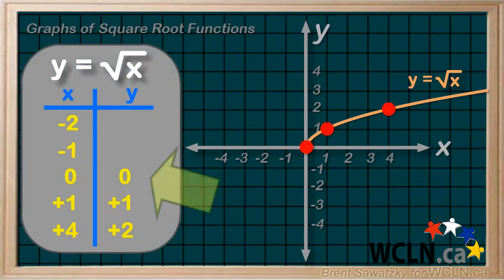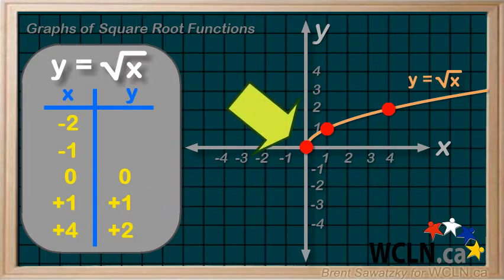Recall that the square root of zero is zero. So our y-intercept for this base is going to be zero, right at the origin.